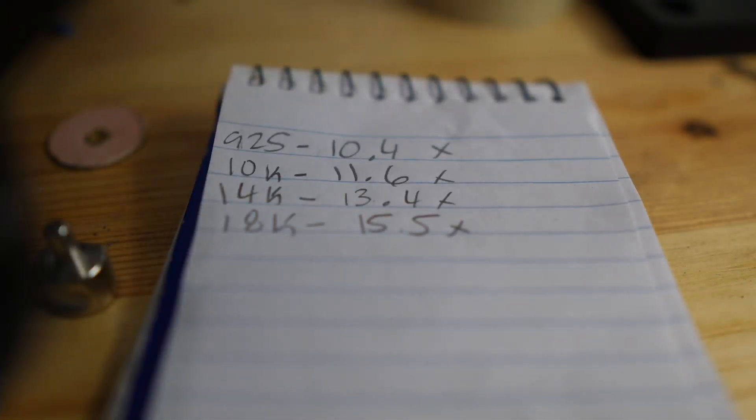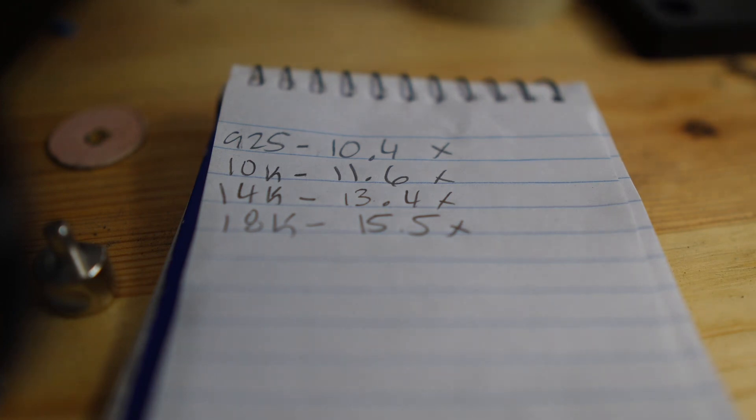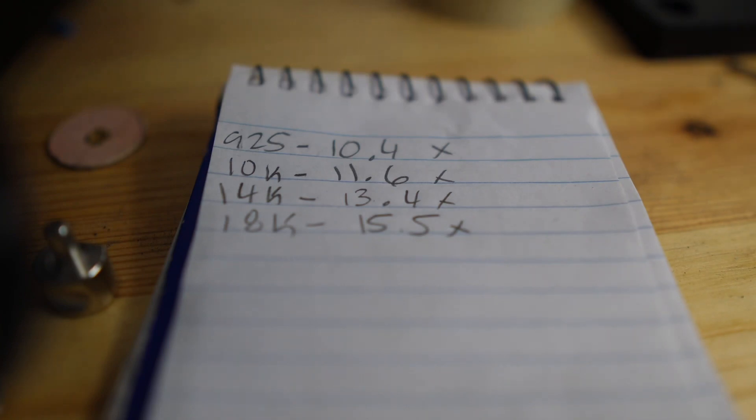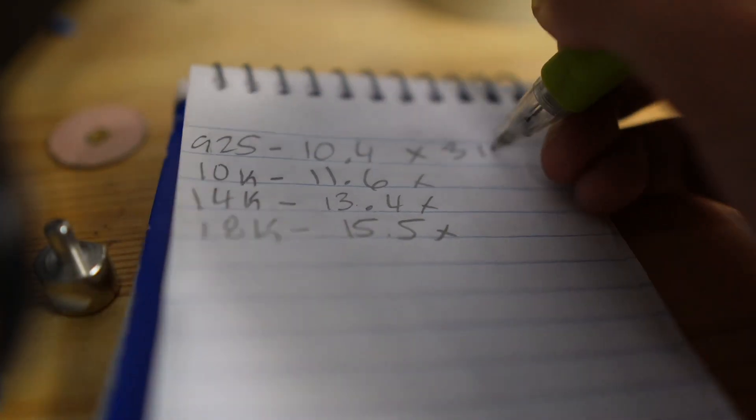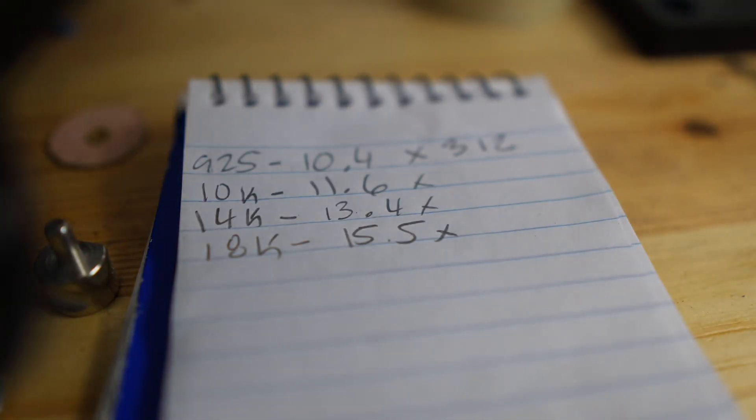Okay so right here is actually going to be the exact ratio from wax to metal. So for example on the top row I have 925 silver that's going to be 10.4 times whatever the weight of the wax or resin is. Same with 10 and 14 and 18 karat. All you have to do is multiply that number with whatever the weight of the resin or wax you have is. So for example the 925 silver is going to be 10.4 times 30 and I'm going to get 312 grams, which is going to be the amount that I am going to use to cast with.